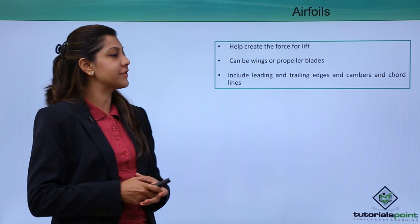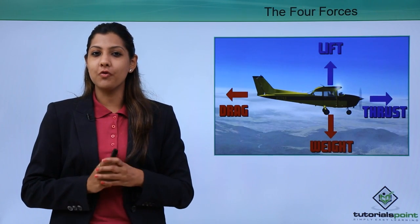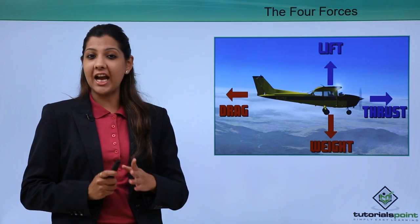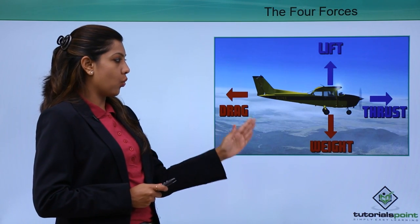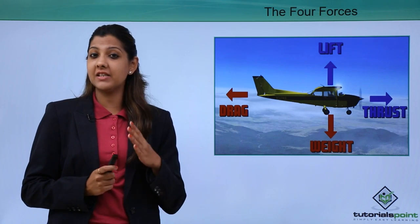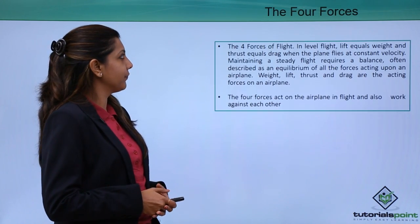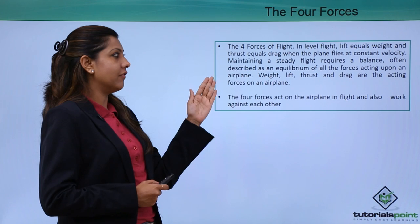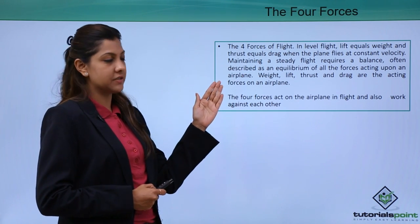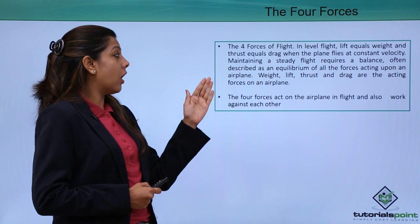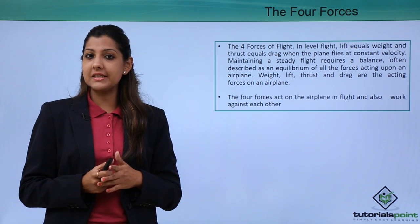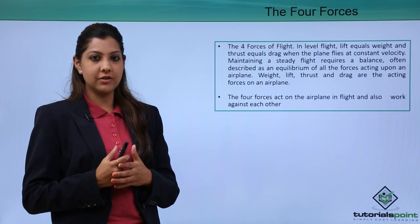There are four main forces that act on an aircraft: lift, weight, drag, and thrust. They all act in opposite directions, which helps the aircraft move through the air, take off, and land. In level flight, lift equals weight and thrust equals drag. Maintaining a steady flight requires a balance — an equilibrium — of all four forces acting together on the airplane.